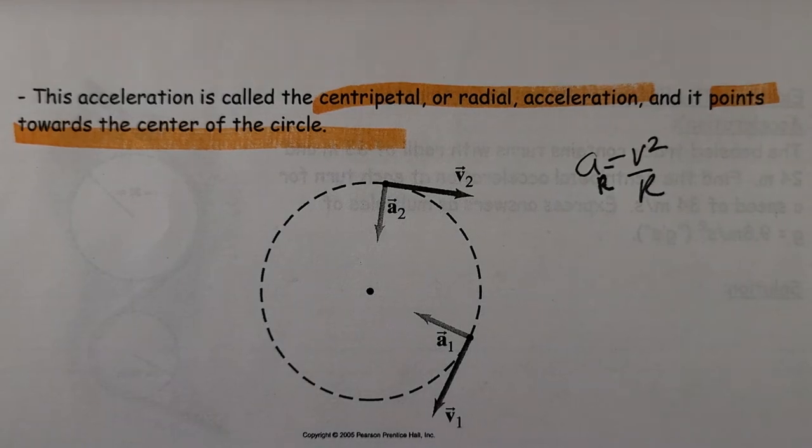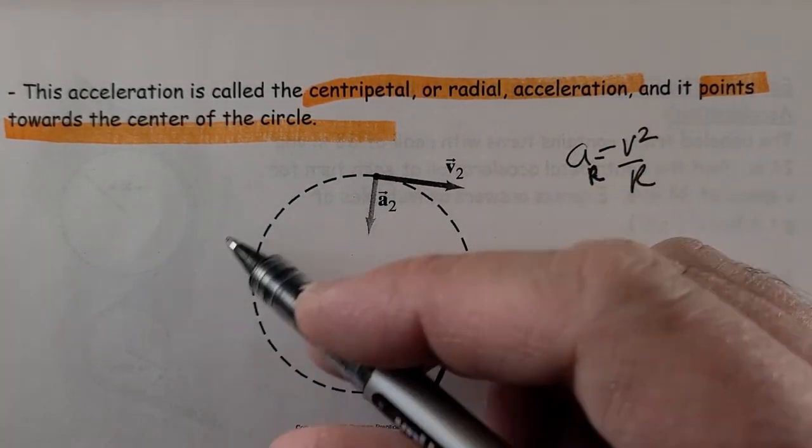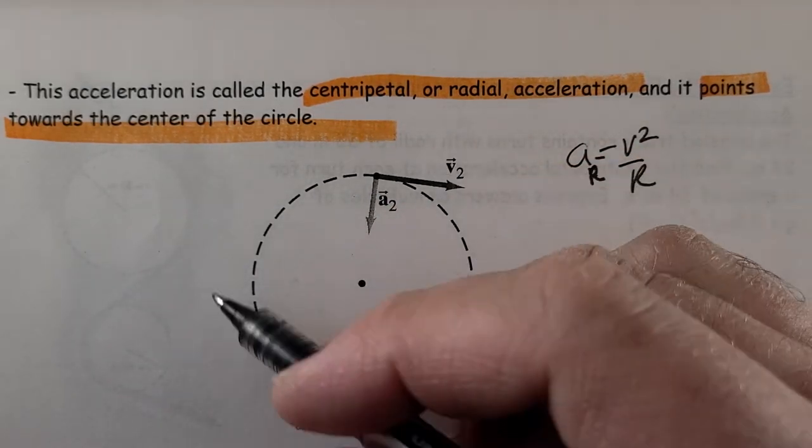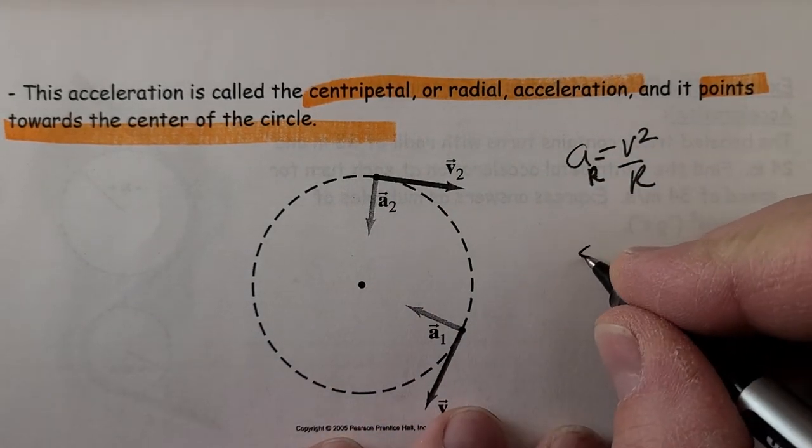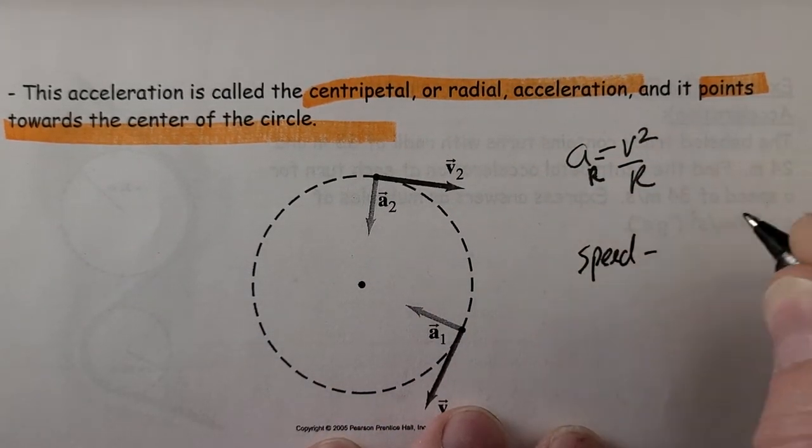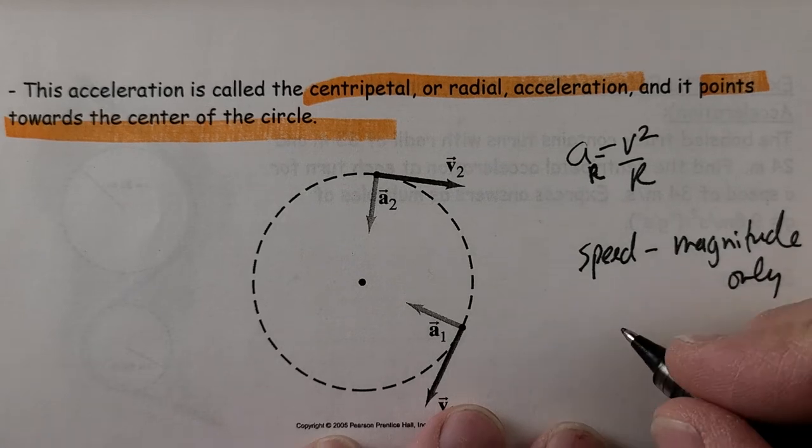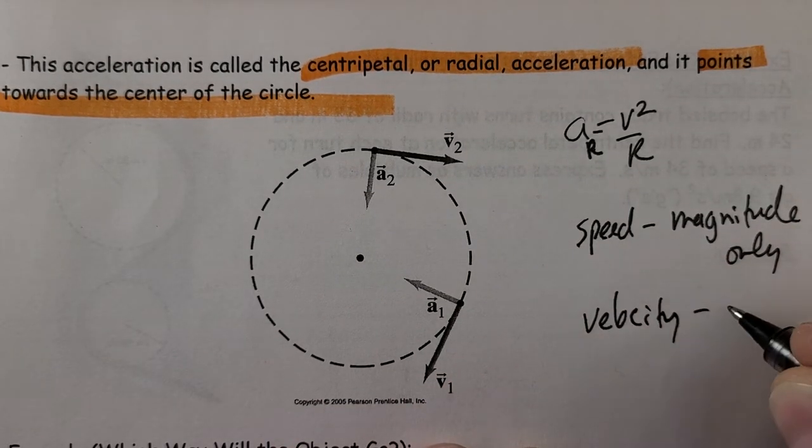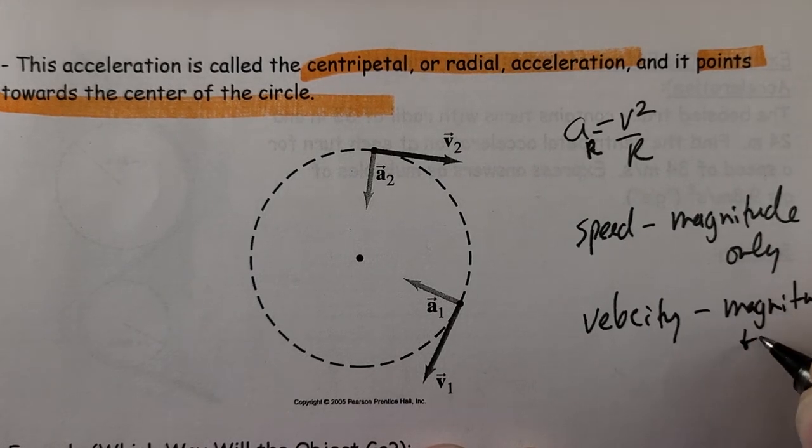Even though if I'm whirling a ball on the end of a string, it's going at a constant speed around, you would think it's constant velocity as well. But velocity depends upon speed and direction. Speed has magnitude only because it's a scalar quantity. Velocity has magnitude and direction.